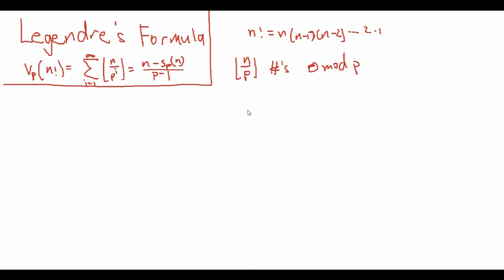Now, let's check how many of those numbers are divisible by p squared. Well, by similar reason, we have that n over p squared numbers are divisible by p squared, 0 mod p squared. And we continue this idea to get that for all positive integer k, we have that there are the floor of n over p^k numbers that are divisible by p to the power of k.